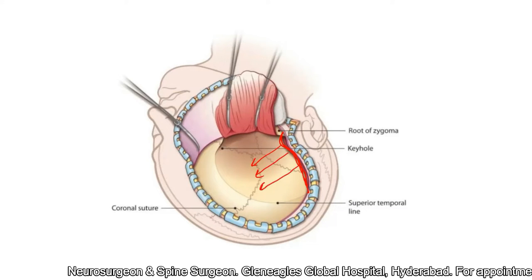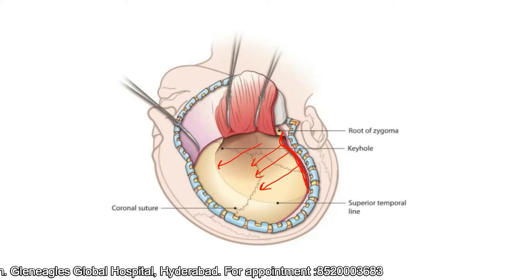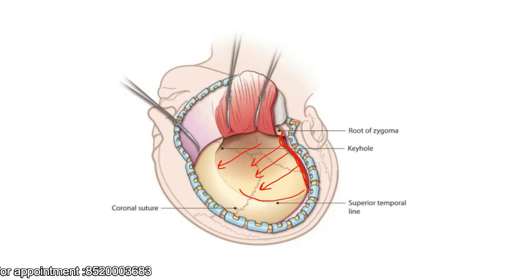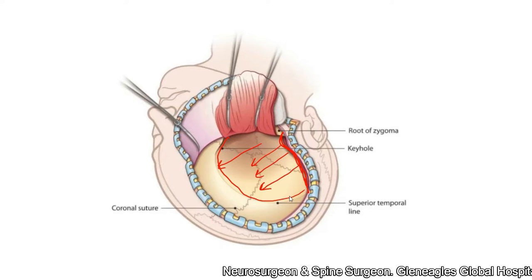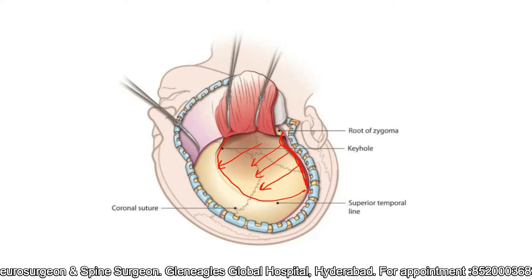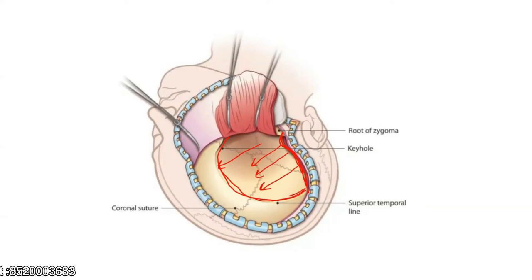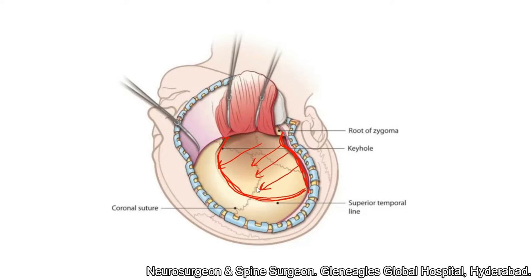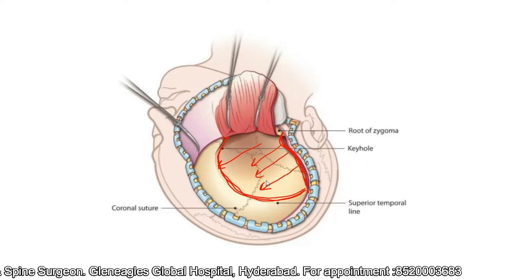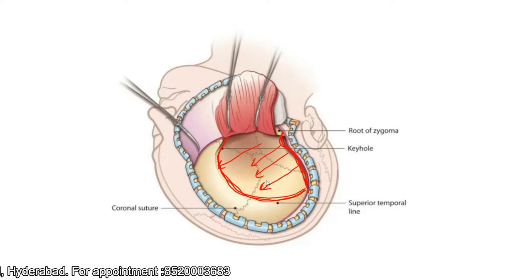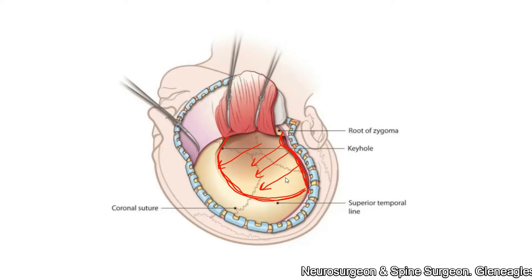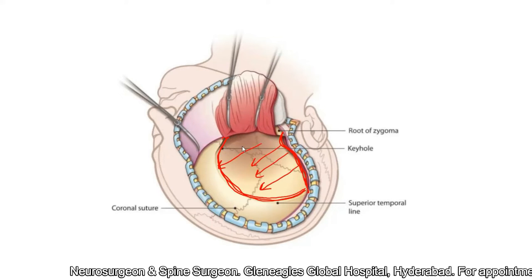I use a narrow periosteal elevator to separate the temporalis muscle from the bone. When you come to the attachment of the temporalis muscle along the line, you can use either the periosteal elevator or a monopolar to detach it. You can leave a small cuff of muscle attached along the line, which will help to suture the muscle back later. Since this is a decompressive craniectomy and you are not planning to preserve the bone flap, this precaution is not strictly required. The temporalis muscle is then reflected backward.